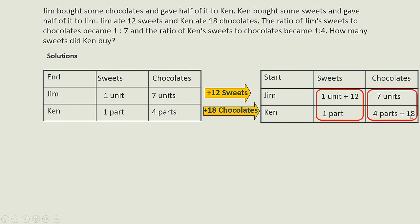Since Jim brought some chocolates and gave half to Ken, if you read carefully, this means that at the start the number of chocolates between Jim and Ken must be the same — because the keyword is 'half'. For example, if I brought 2 chocolates and gave half to you, we'd each have 1. Similarly, since Ken brought some sweets and gave half to Jim, the number of sweets at the start will also be the same.